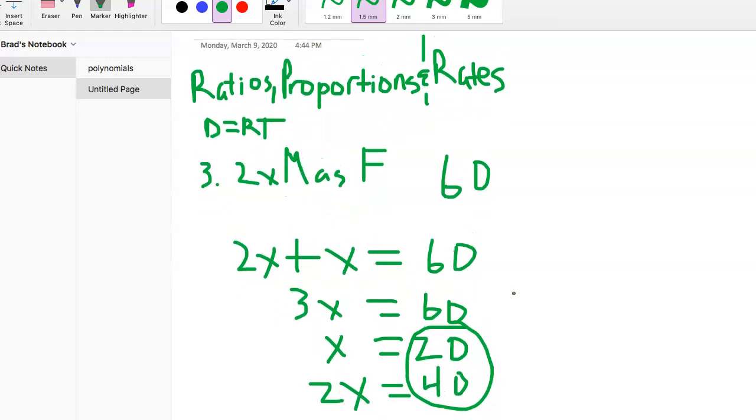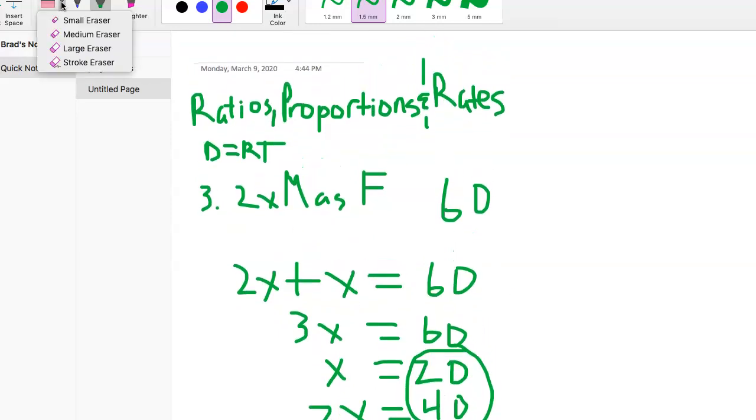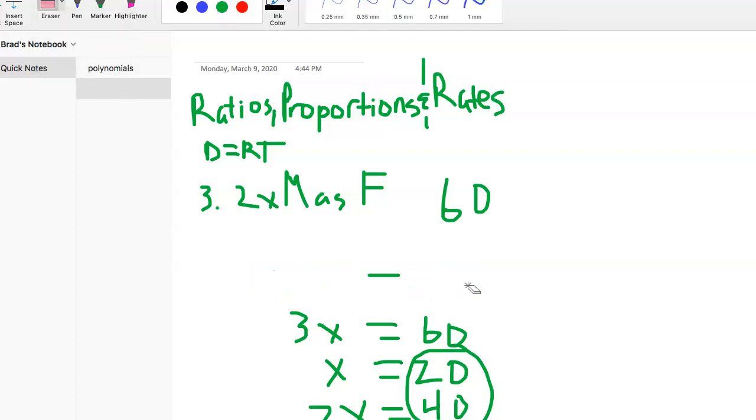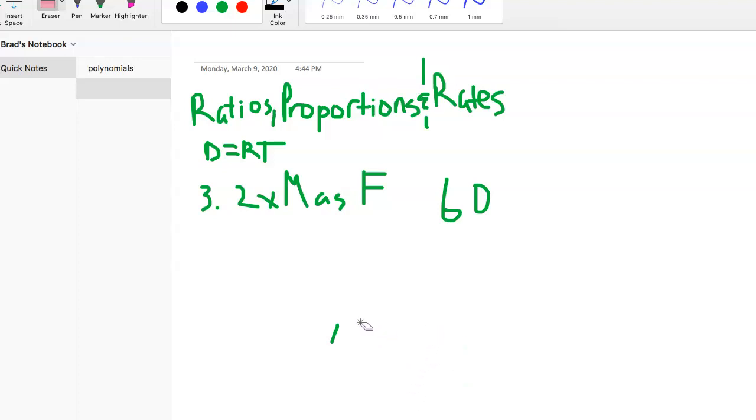You could even think about this kind of stuff in math terms. What if instead of two times it was three times as many males as females? What if it was three times as many males as females and there were 60 in a class? Then it would be very similar. You just go 3X plus X equals 60.